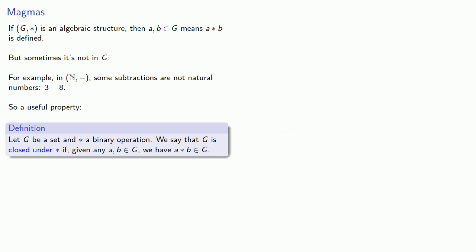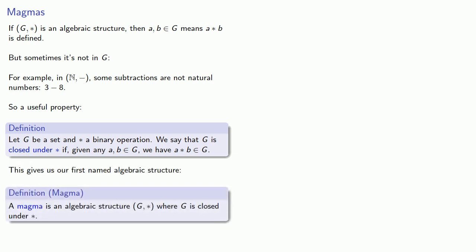And since not all algebraic structures have this useful property, let's go ahead and give it a name. We'll define a magma, an algebraic structure G star, where G is closed under star.